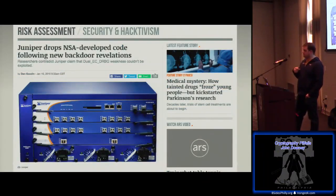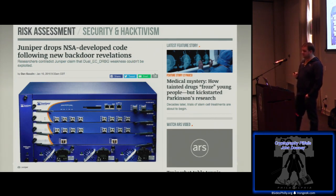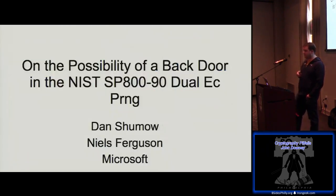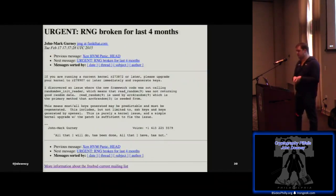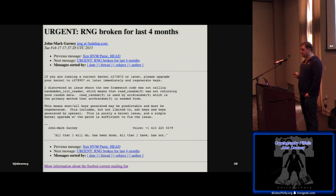Juniper, around last year, had constants in the random number generator in a lot of their appliances and they didn't know where those came from. They were using the Dual EC random number generator, which is known to be backdoorable. Even years before Snowden, cryptographers had presented at the 2007 crypto conference that this standard is totally backdoorable and no one should use it. FreeBSD had their own issue — it never made it into a released version, but it was broken in the current branch for around four months during a refactoring of the random number generator.